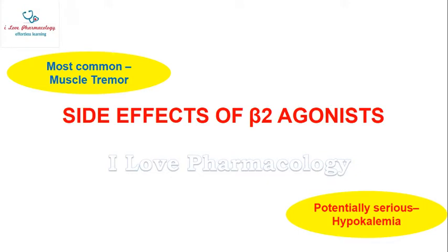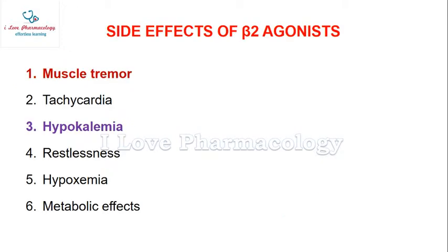Welcome to I Love Pharmacology. Today in this session you will learn about the side effects of beta-2 agonists. A simple example of a beta-2 agonist is salbutamol, which is used in treating bronchial asthma.